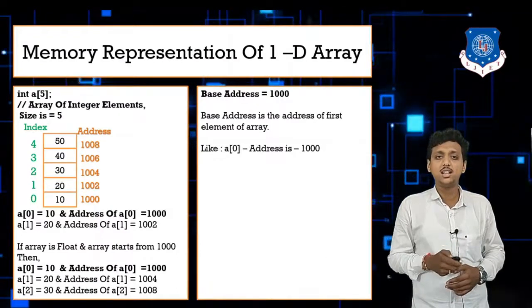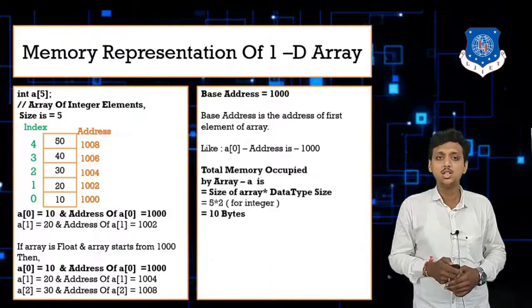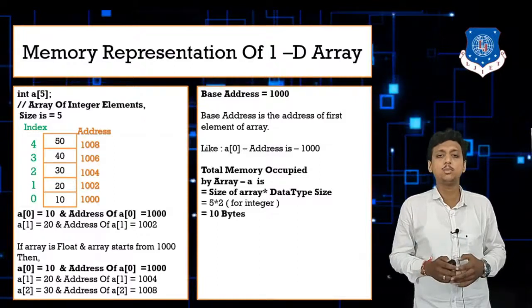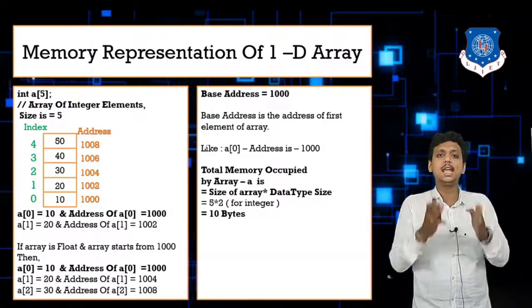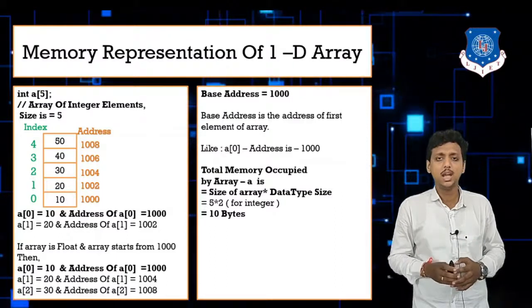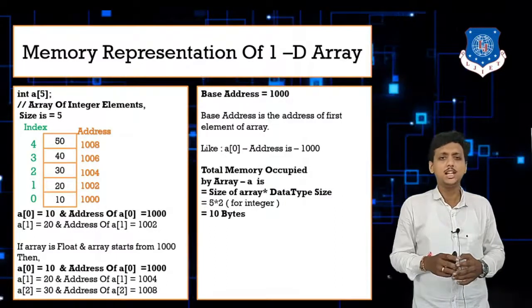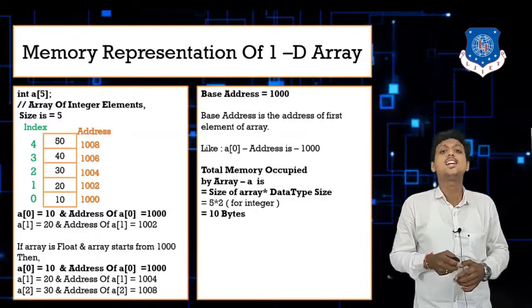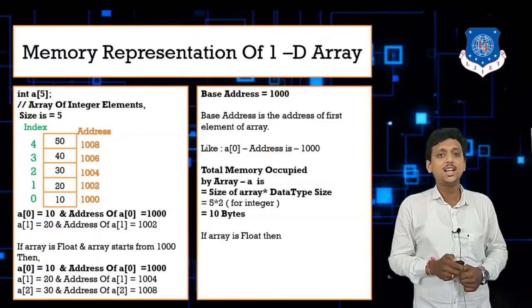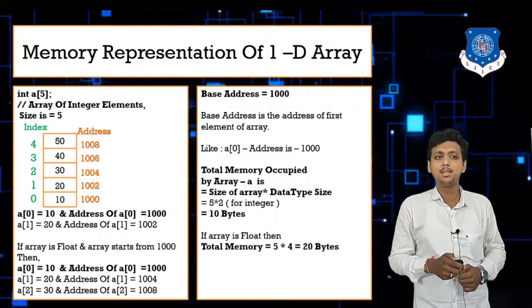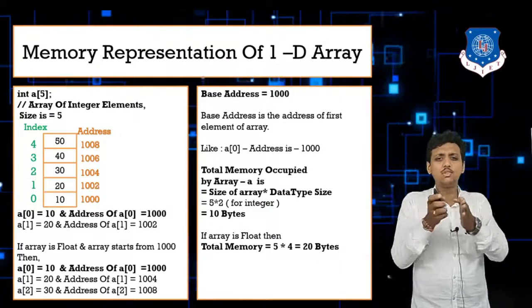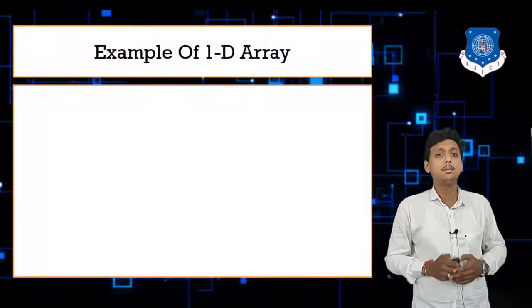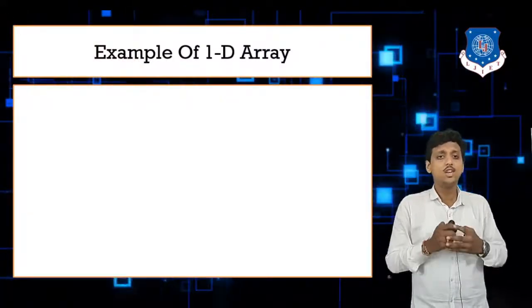The address of the first element of the array is known as the base address. Here the base address is 1000. The total memory occupied by this array is 10 bytes, because there are 5 elements each of integer type occupying 2 bytes: 5 × 2 = 10 bytes. If the array were of floating type, the memory would be 5 × 4 = 20 bytes.